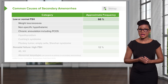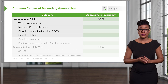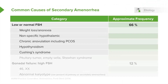You can also see a low or normal FSH with hypothyroidism — when your thyroid is not functioning as it should be — as well as with Cushing syndrome. A pituitary tumor, an empty sella, or Sheehan syndrome can also cause a low or normal FSH.